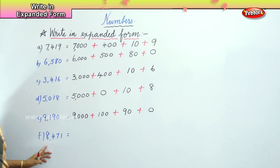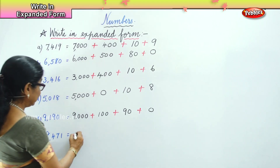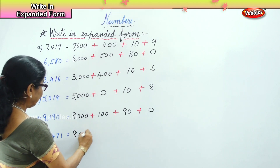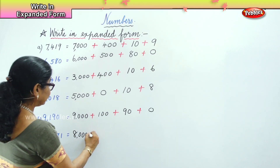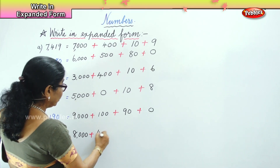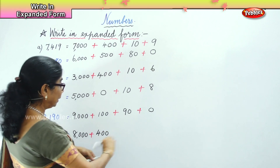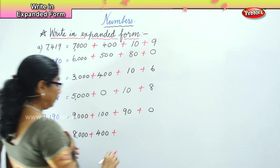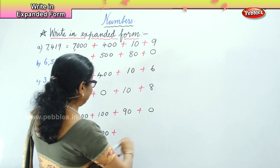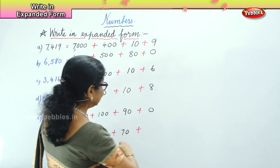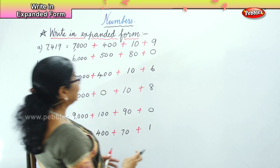And finally, you have 8,4,7,1. What will you write? Eight thousand, plus four hundred, plus seventy, plus one.